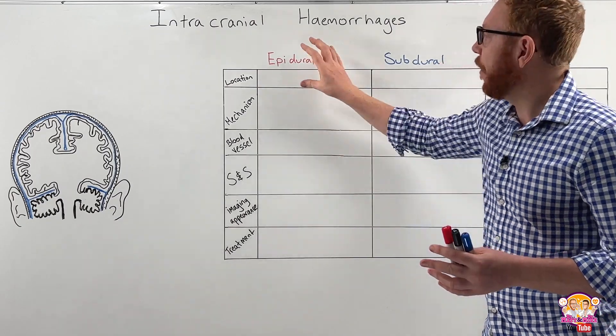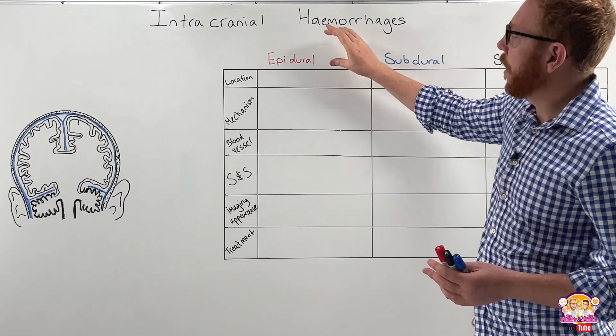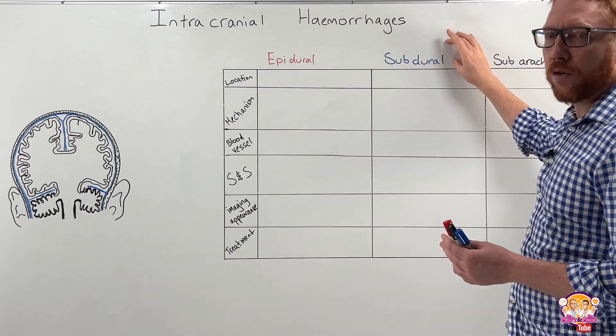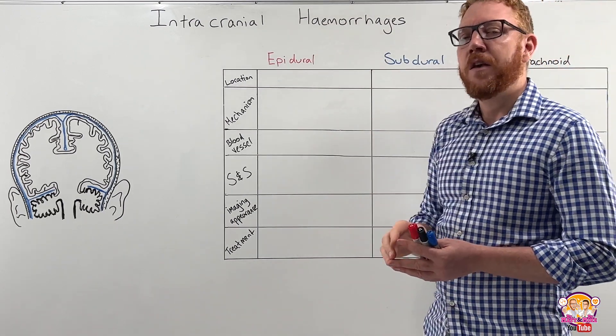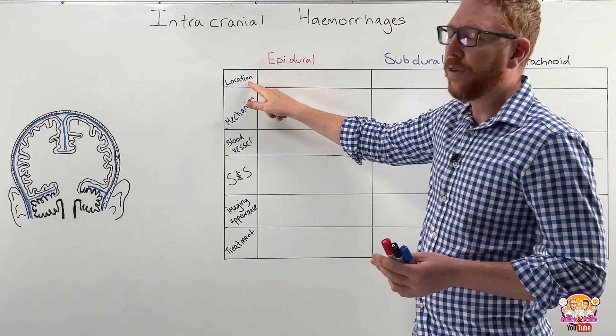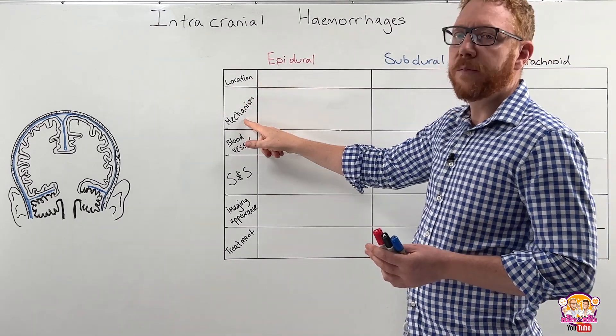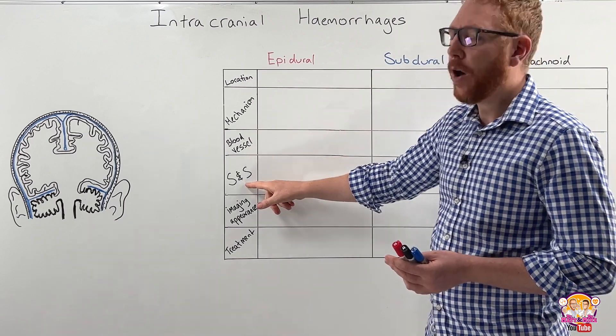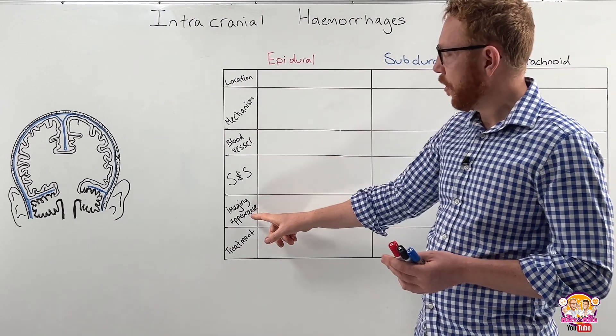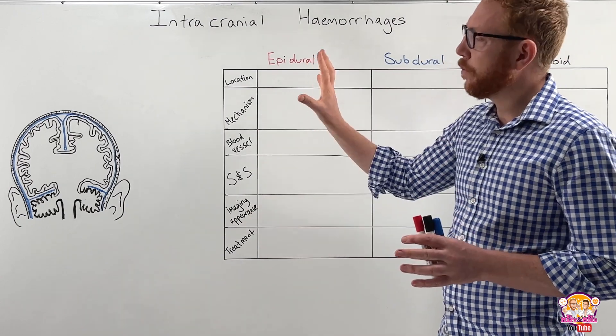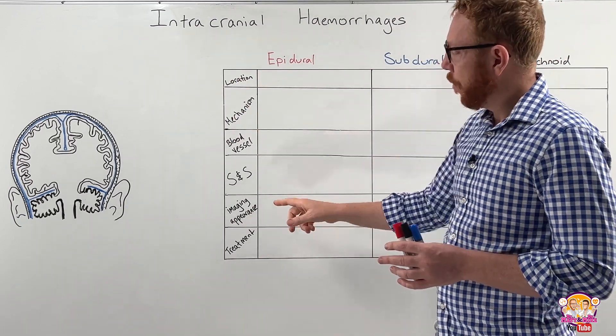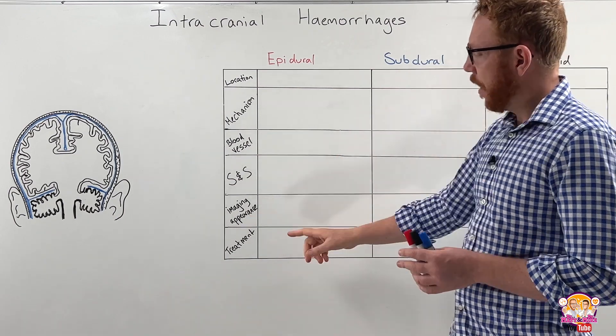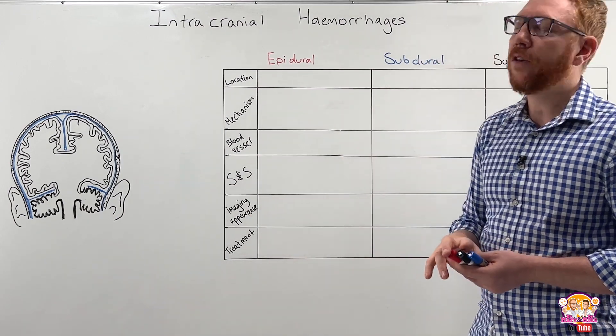In this video we're going to compare and contrast three subtypes: epidural hematomas, subdural hematomas and subarachnoid hematomas. Specifically we'll look at the locational differences within the skull, the mechanism that leads to the bleed, the blood vessels involved, the common signs and symptoms that you would see in your patient, what kind of CT image you would expect to see, and the treatment management that would be used.